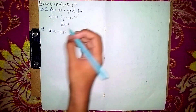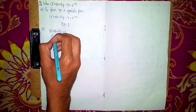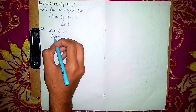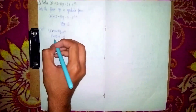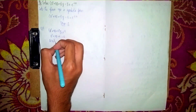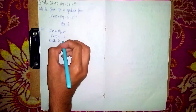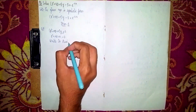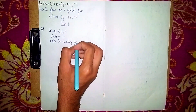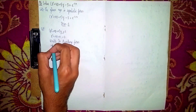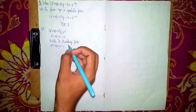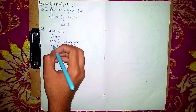Since the RHS is zero, our equation becomes D² + 4D + 4 = 0. Now write this in auxiliary form — in the auxiliary form, instead of D write m. So it becomes: m² + 4m + 4 = 0. Now I am using the middle term splitting method to find the factors.